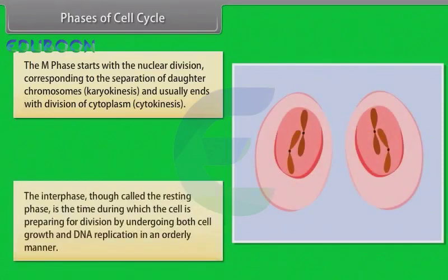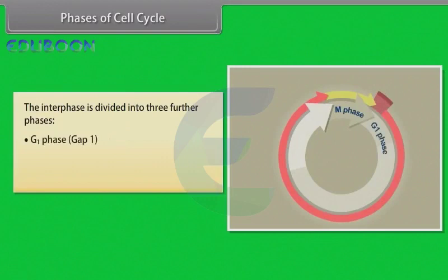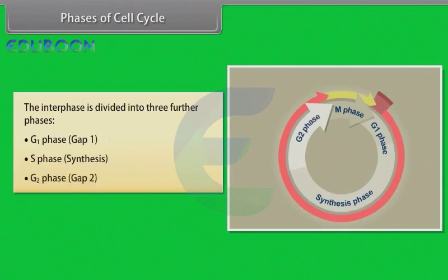The interphase, though called the resting phase, is the time during which the cell is preparing for division by undergoing both cell growth and DNA replication in an orderly manner. The interphase is divided into three further phases: G1 phase or gap 1, S phase or synthesis phase, and G2 phase or gap 2.